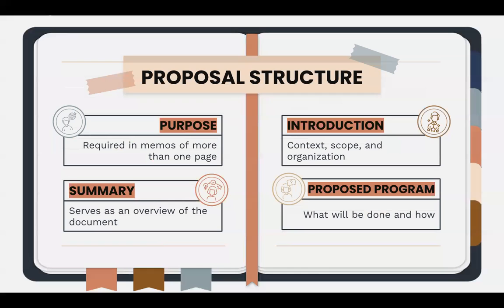The first thing you'll have in the main part of your proposal, after whatever heading material you would have — which depends upon the format and the particular genre of your proposal — in our case that's going to be a memo. After the header information, you're going to have a statement of purpose.